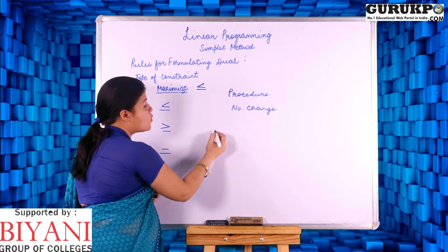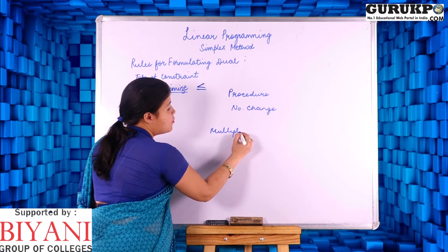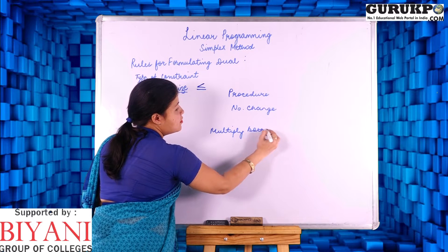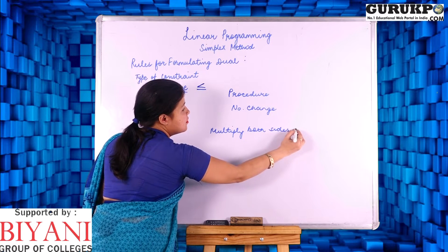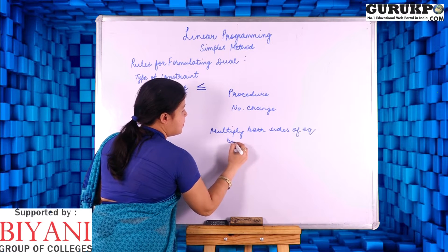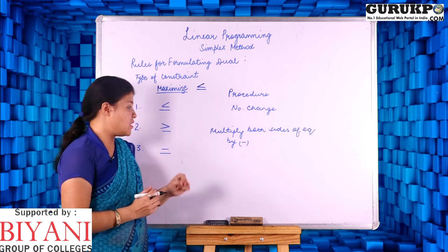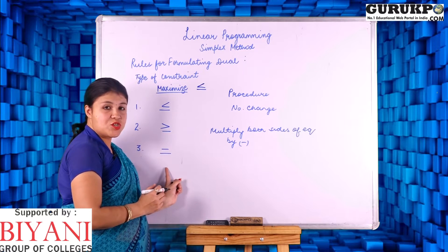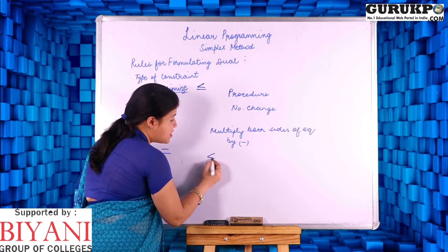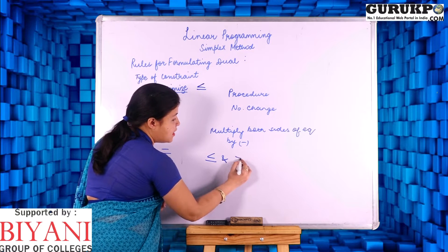If the equation is in the at-least form, we are going to multiply both sides of the equation by minus, that is a negative sign. And if the equation is equals, then it comprises of both the signs — at most and at least.